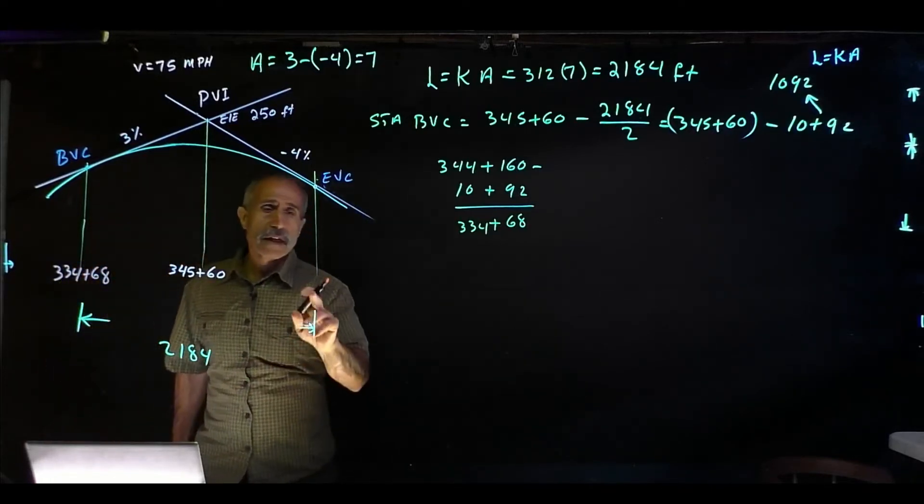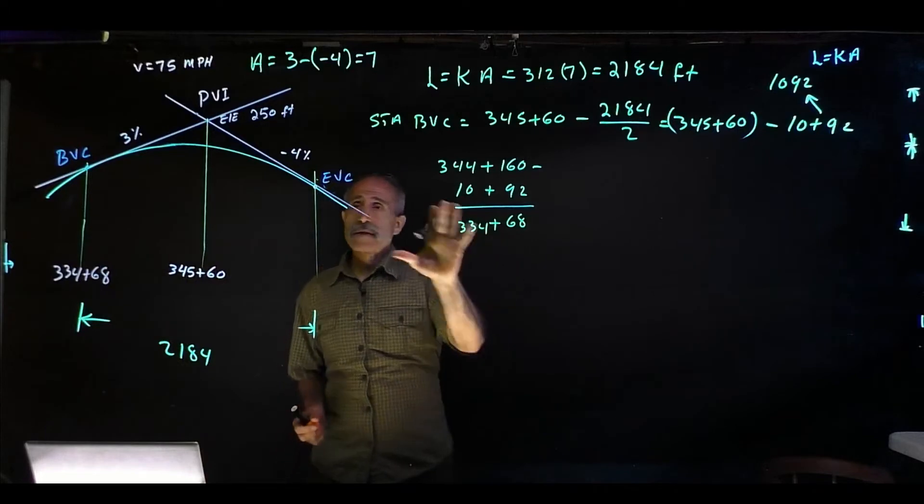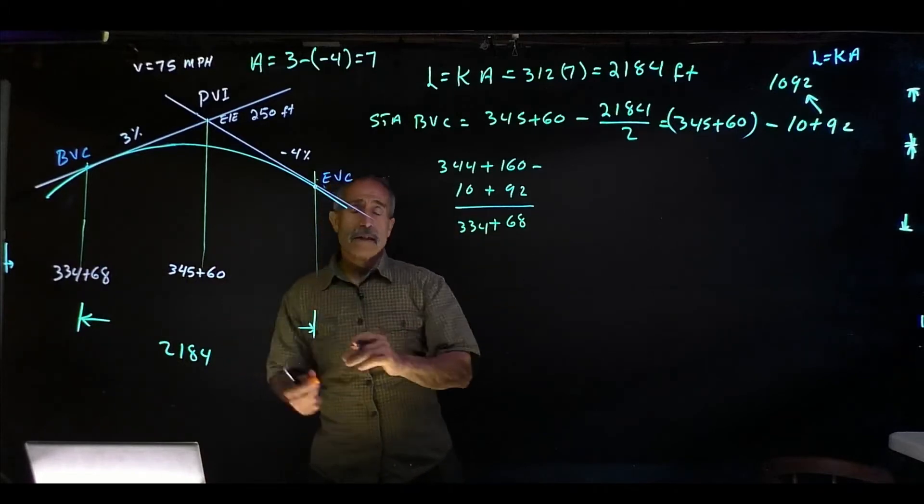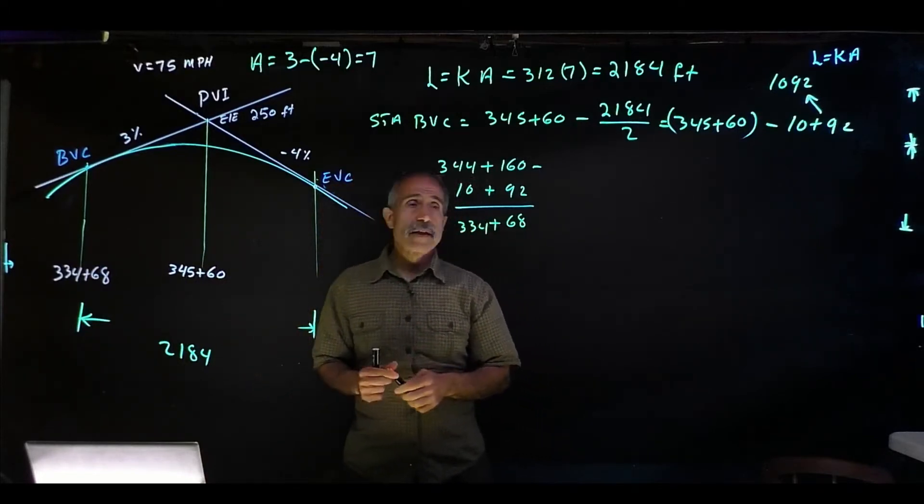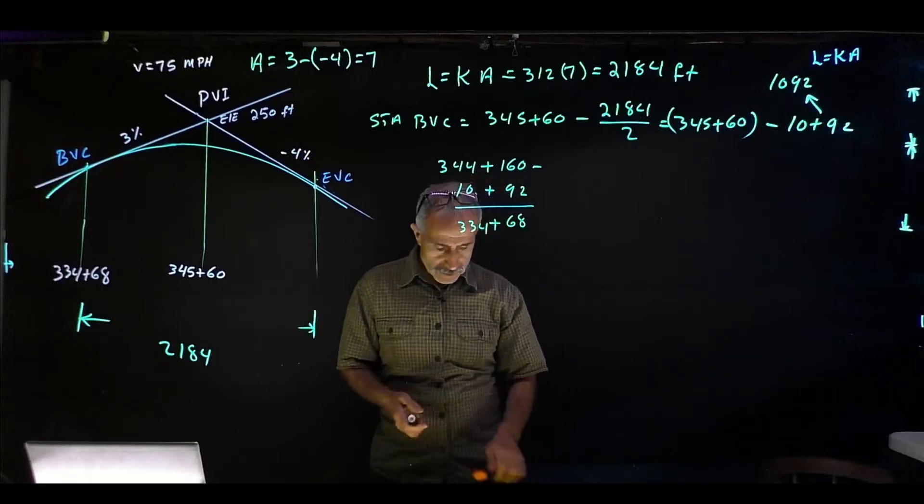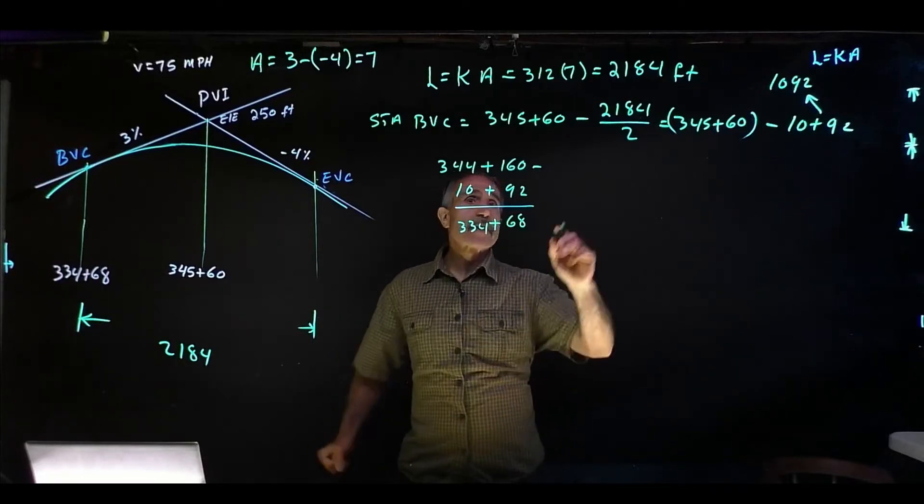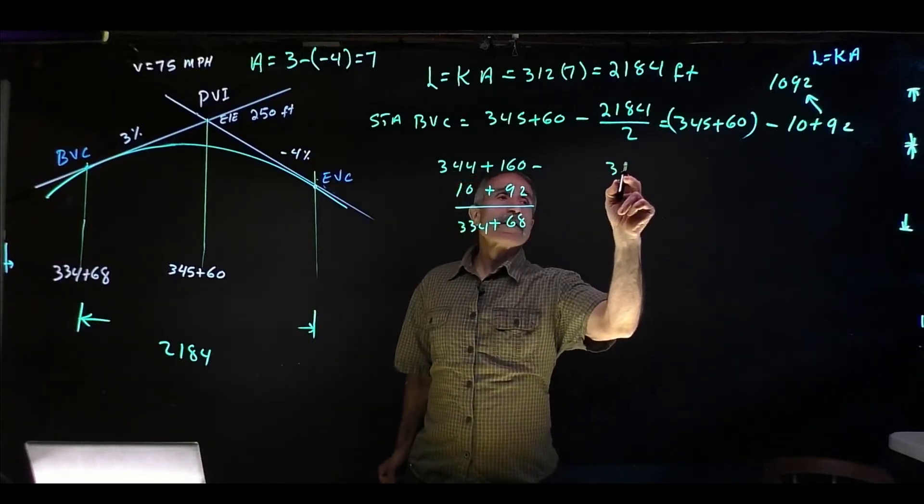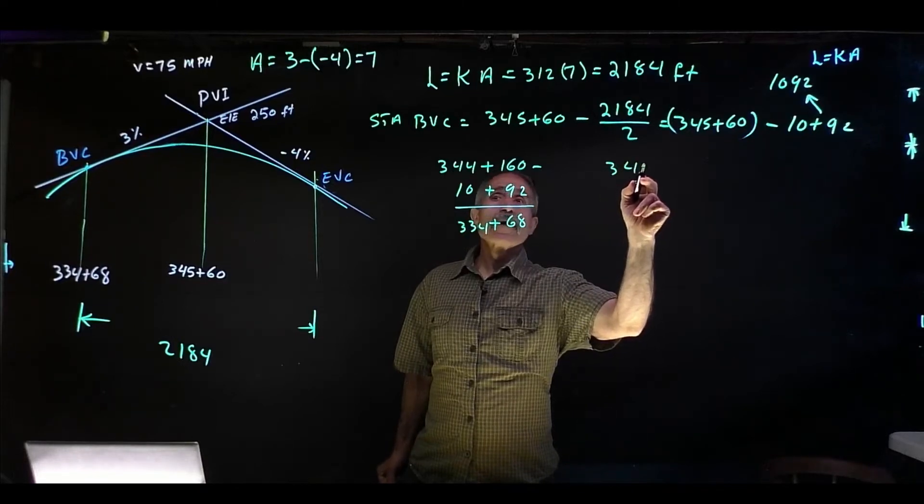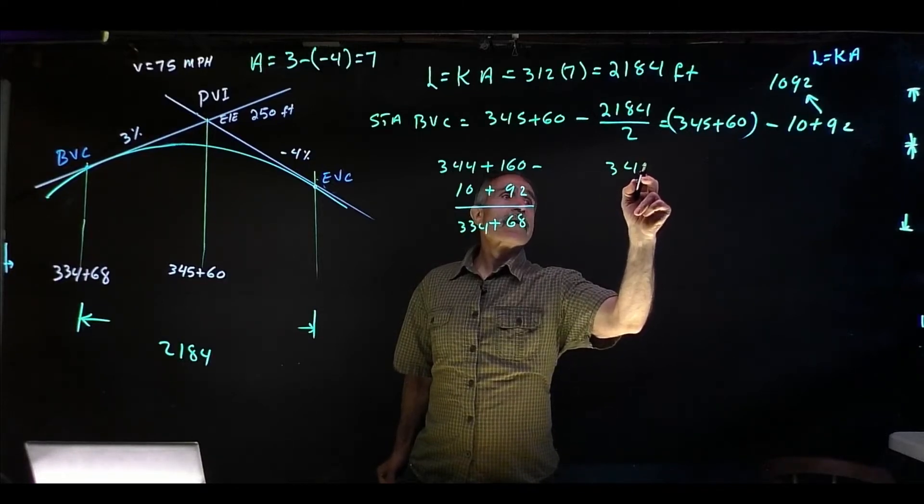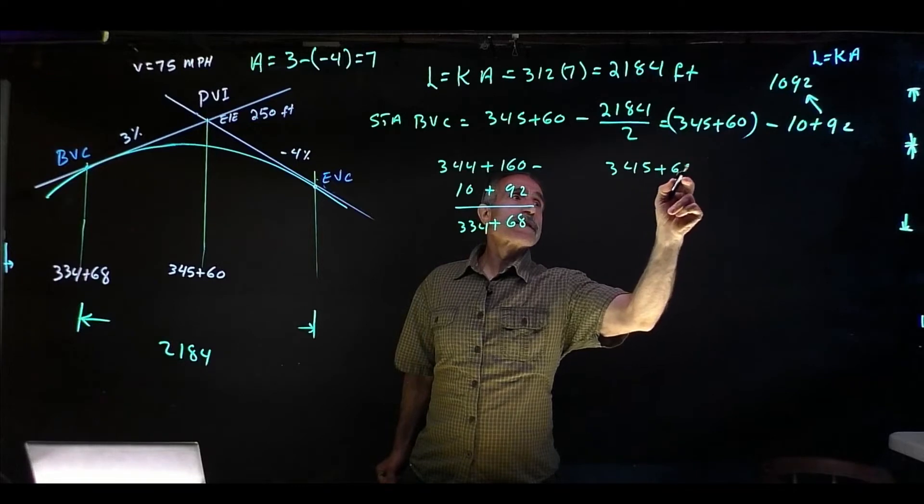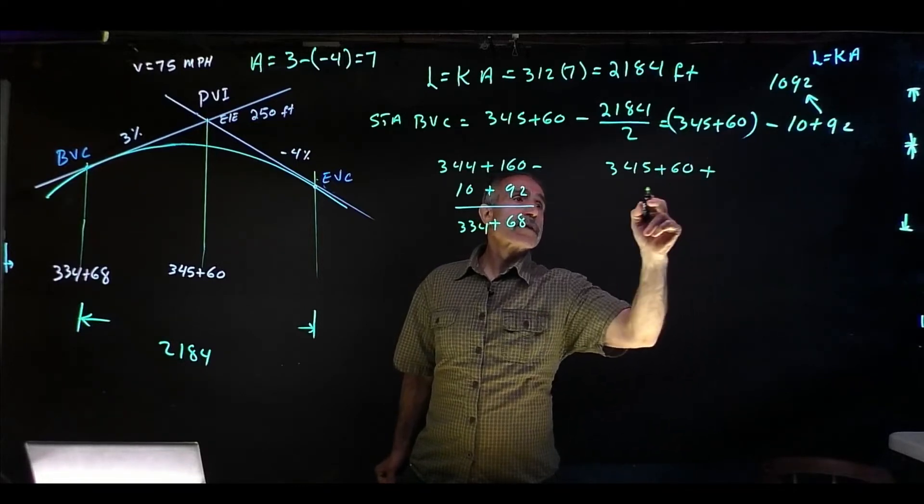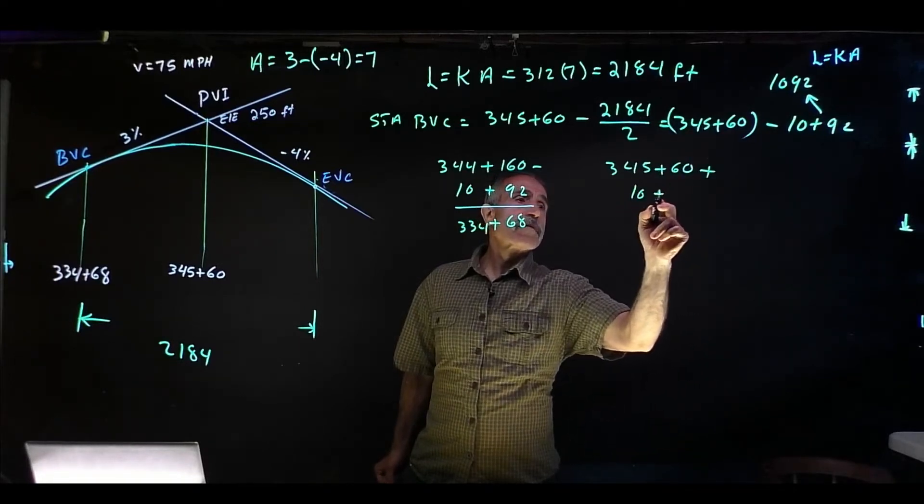So this station right here is going to be 334+68. That's the beginning of the curve. And let's find out what this station is. It's the same philosophy if you were just going to add 1092 to the other side.